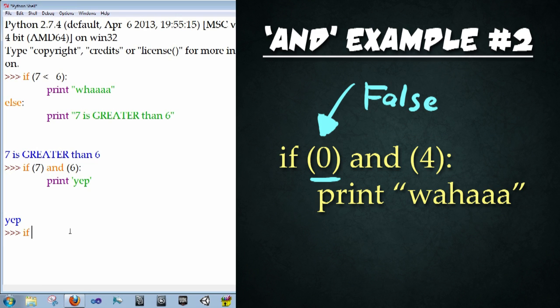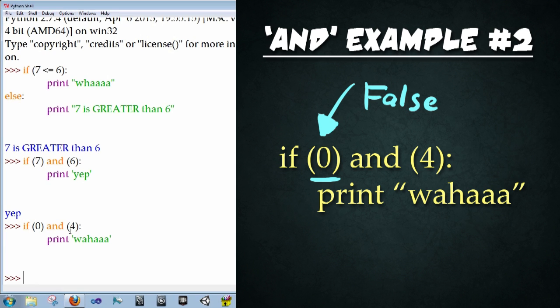If zero and four print woah. Well, enter, enter. And it will not be met because zero is always false.